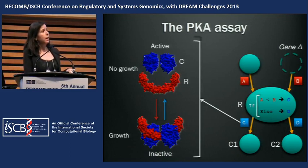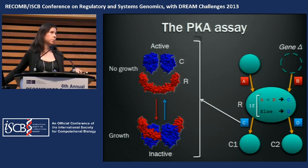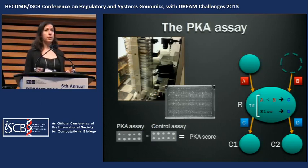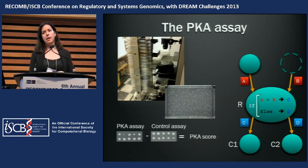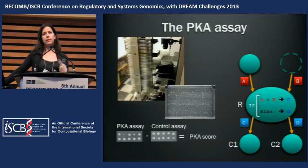In more detail, protein kinase A forms a complex of homodimers of the regulatory and catalytic subunits. When the complex is formed, the PKA is inactive, and that is when we see growth in our assay. We chose two paralogous catalytic subunits to construct this reporter assay, measuring two variables that each stand for one protein-protein interaction. In the lab, this is performed on a robotic platform on high-density agar plates that can accommodate about 1,500 different knockout strains. We perform a parallel control assay to control for the fitness cost of the deletion, and then derive a relative PKA score that tells us if the interaction increased or decreased with the gene deletion.